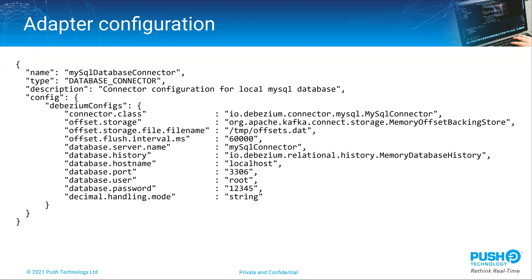The next section tells the adapter how to connect to the database. Most of the time we can take the easy route and copy these values from samples in the Debezium docs. Note that it references Java classes to provide access to specific databases. We package up the libraries for MySQL and PostgreSQL in the JAR file for the adapter, but for other databases you'll have to add them to your classpath before starting the adapter up. I've also added a decimal.handling.mode parameter with a value of string, which means the JSON data out of the adapter is produced as a string rather than an encoded decimal format, which is easier to deal with downstream.